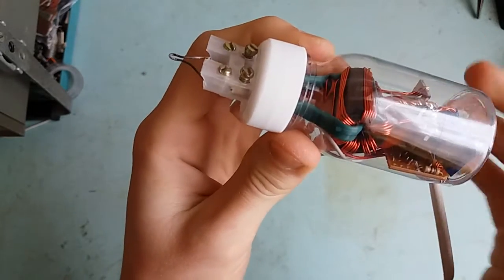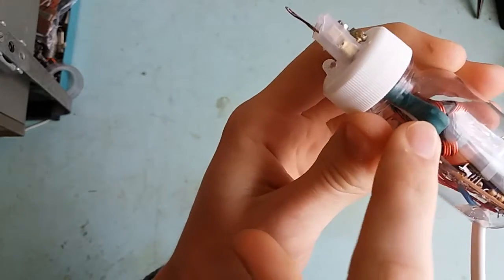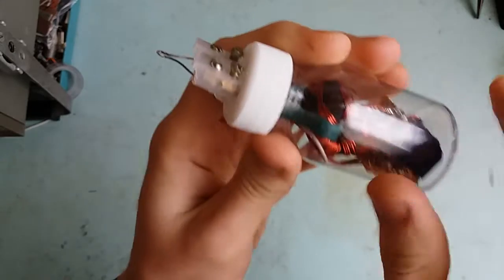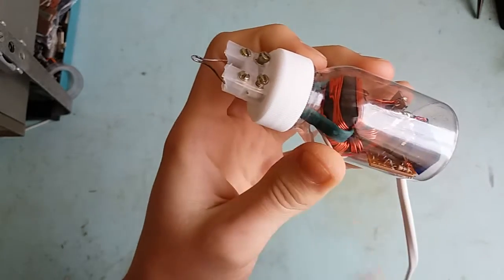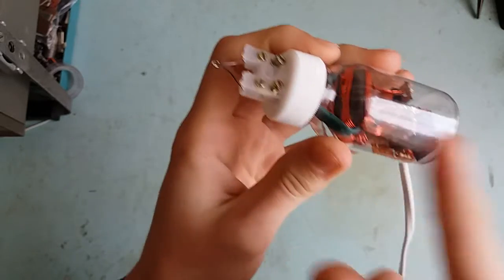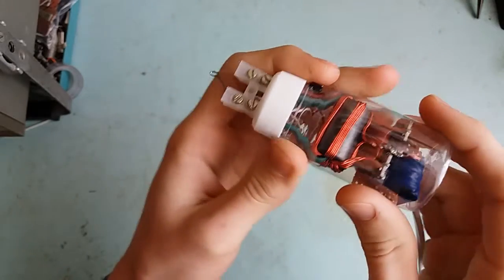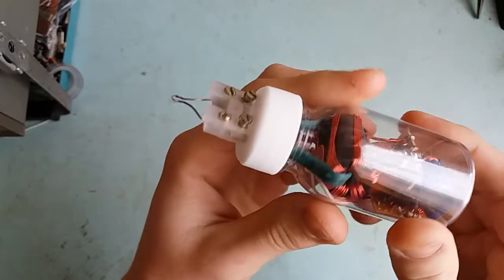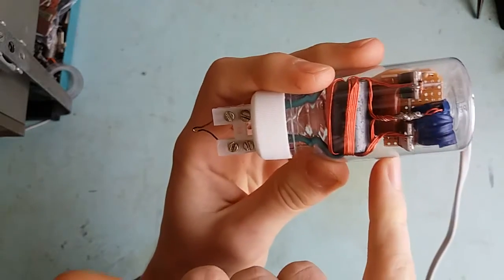That green stuff is the secondary. It's only one turn—it passes through the core once—but it consists of 25 wires because there's a very high current on the output. Twenty-five half-millimeter in diameter magnet wires—that's what it is.